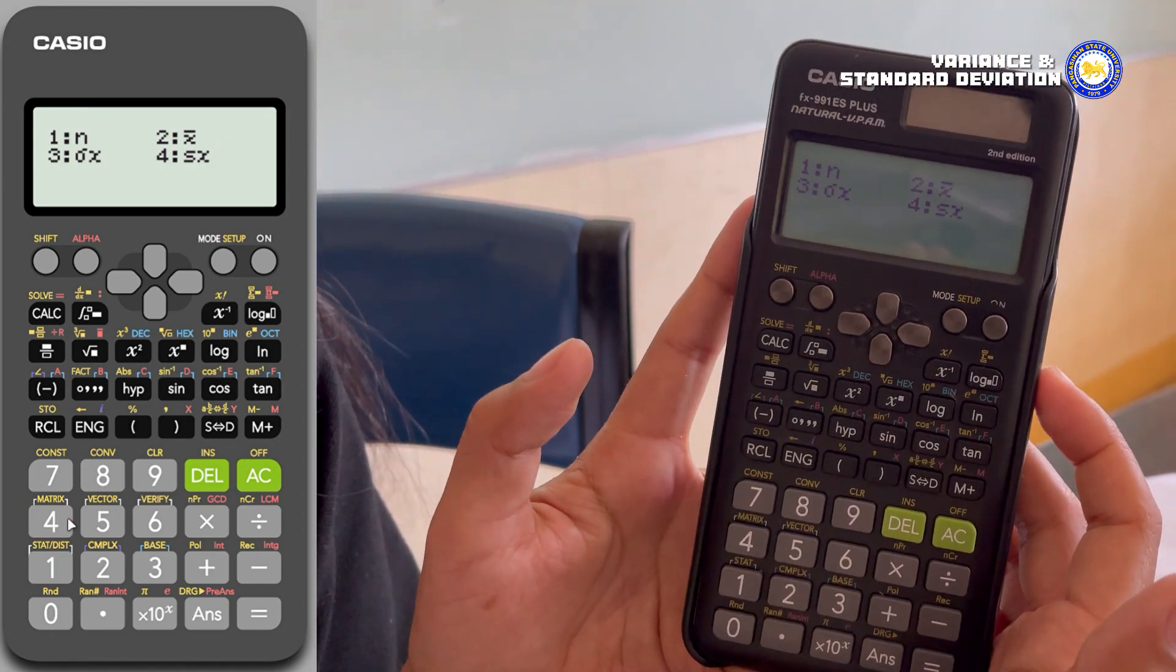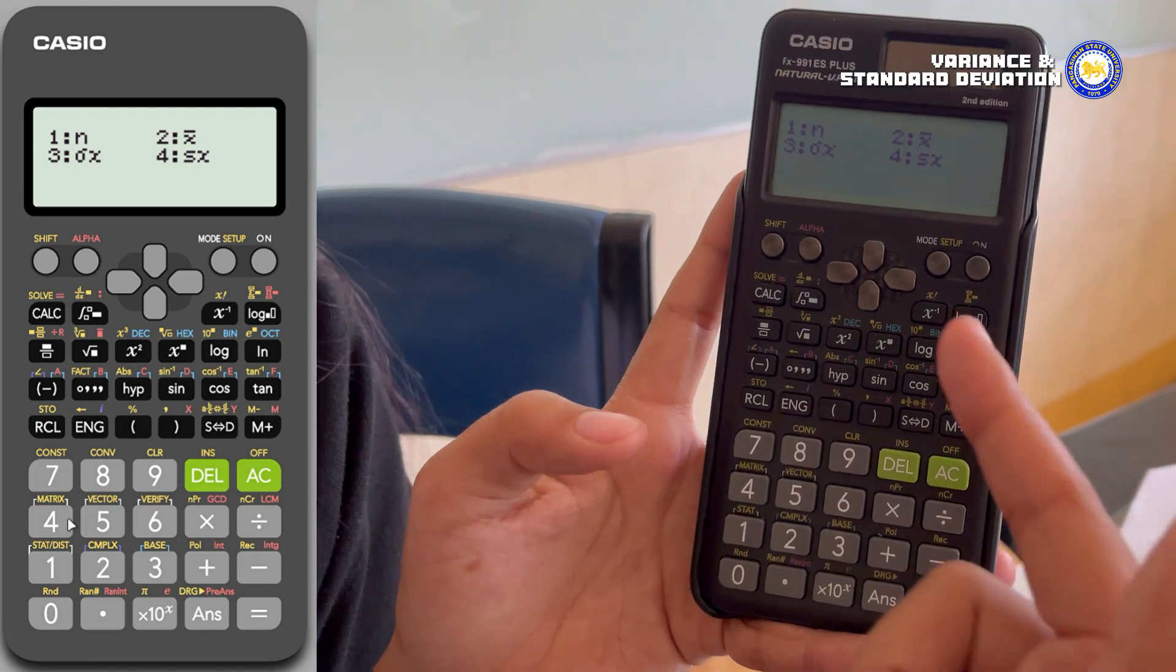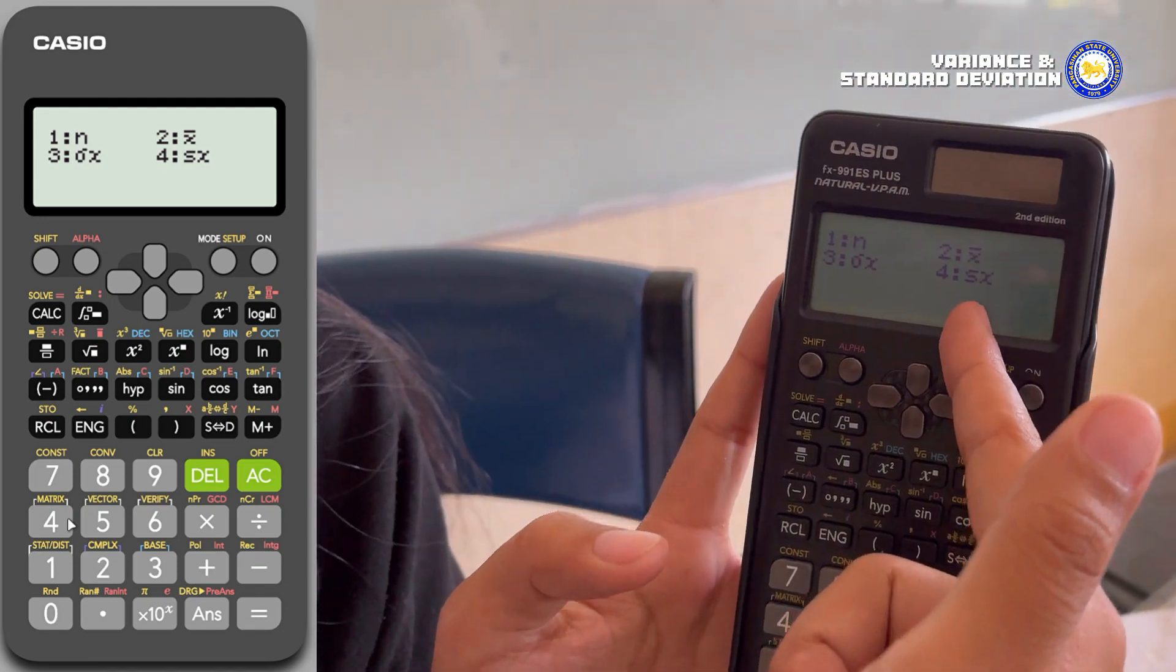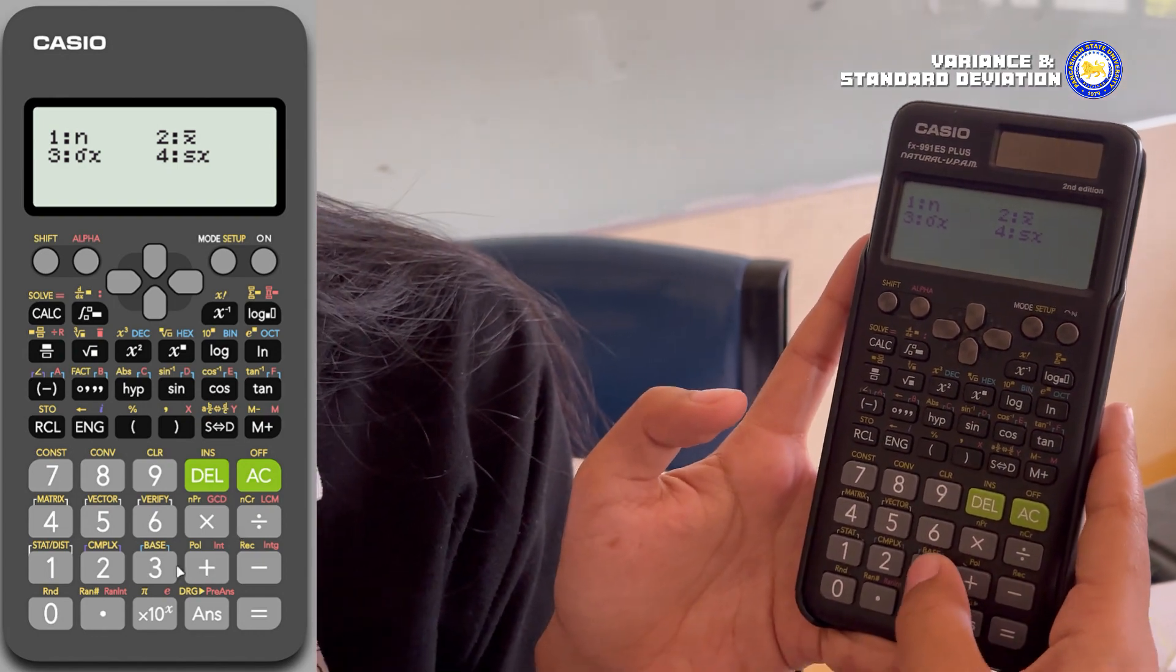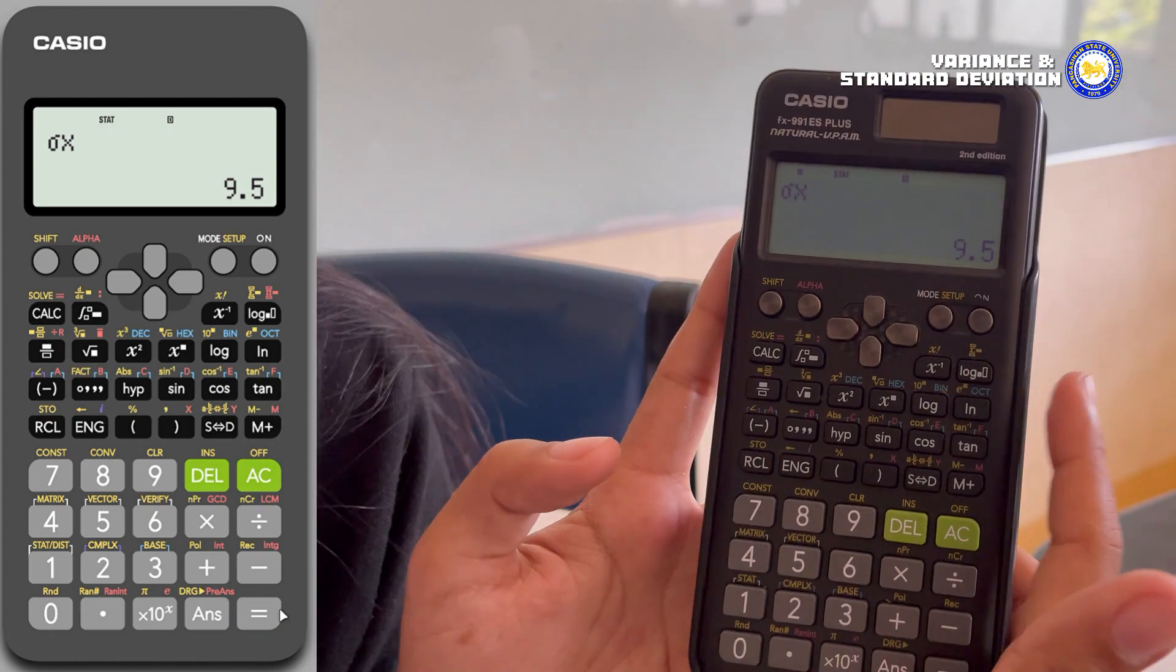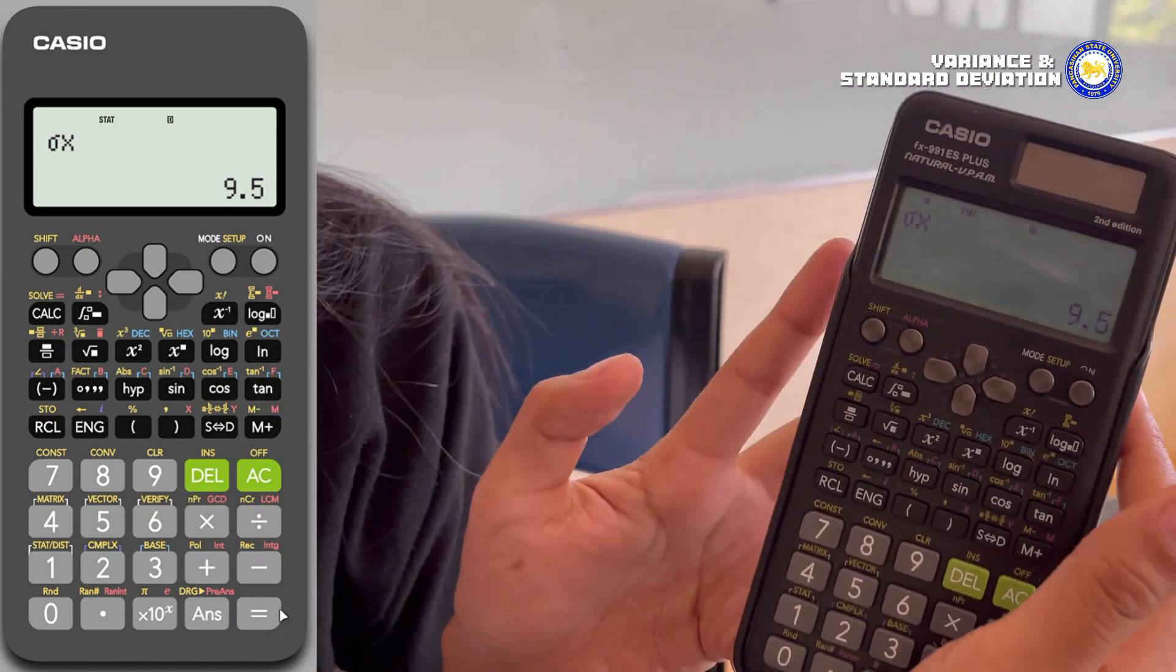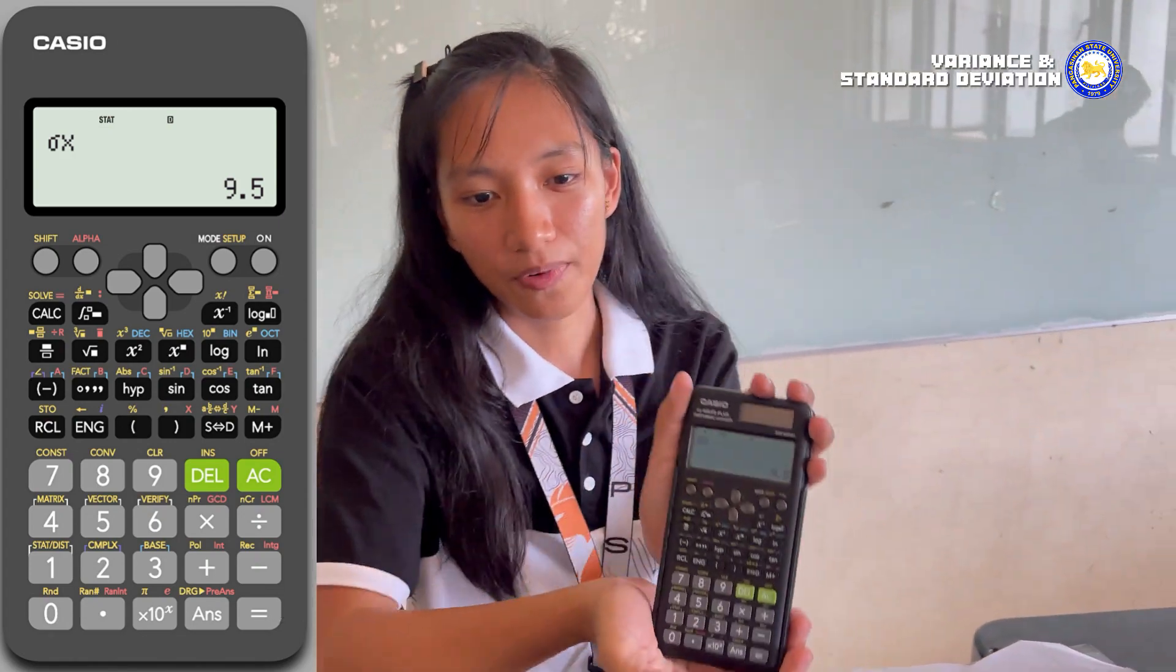Step four will be selecting standard deviation. After the last step, a menu will appear with options such as standard deviation and means. Select 3, then finally press Enter. And that's it, you've got the final answer which is 9.5. You've just learned the art of finding standard deviation using your calculator.